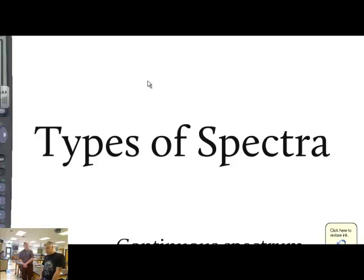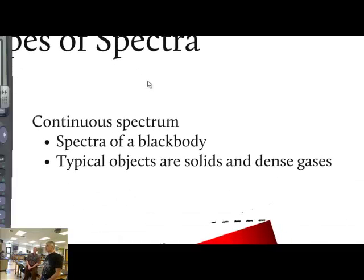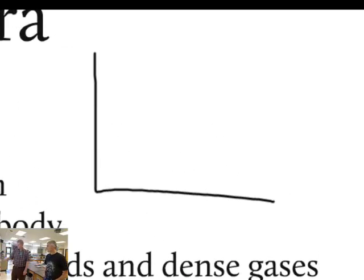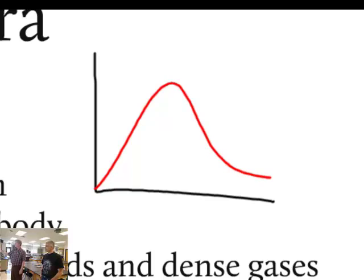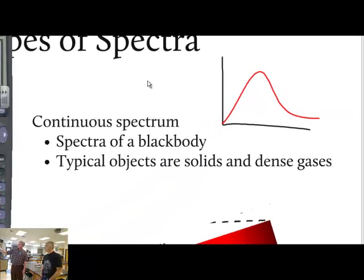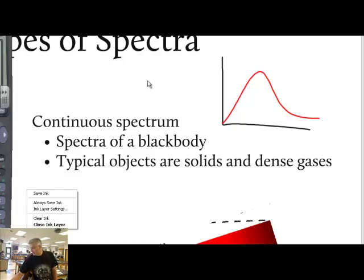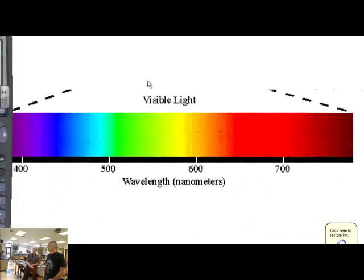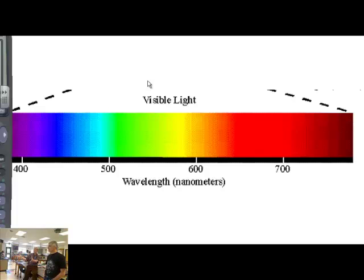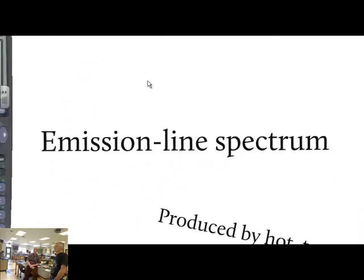There are actually two kinds of spectra. First is the continuous spectrum - the spectrum of a black body. If you look at the graph of the black body spectrum, the line is continuous with no gaps inside it. This is true of objects that are solids or have a dense gas. Notice that all the colors are there - nothing is missing. This is a continuous spectrum.